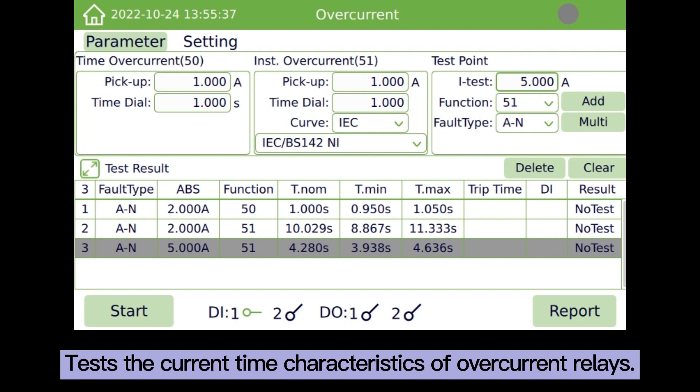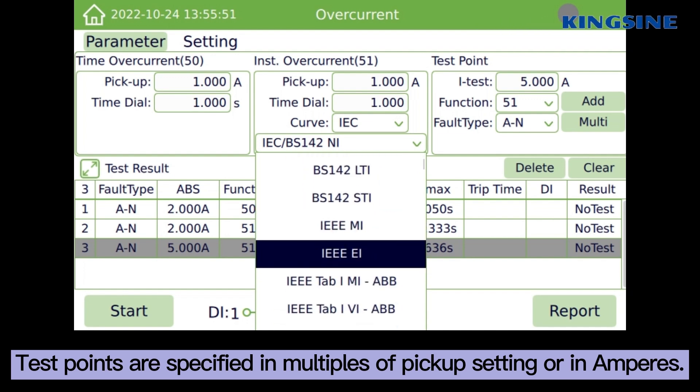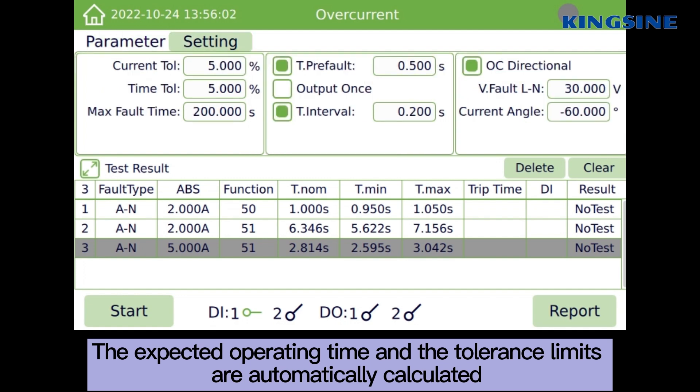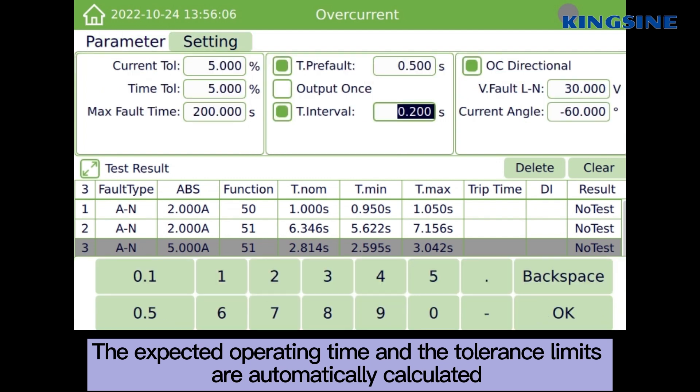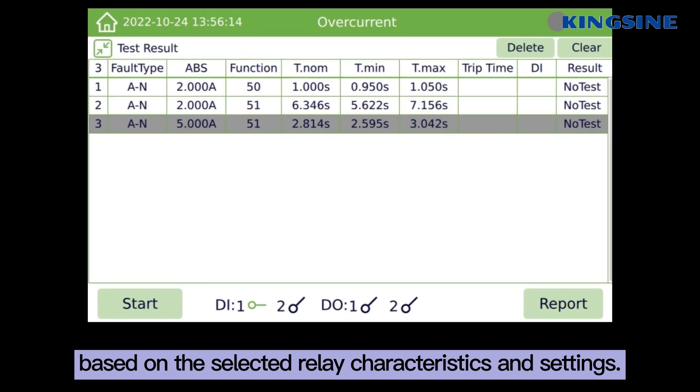Test the current time characteristics of overcurrent relays. Test points are specified in multiples of pickup setting or in ampers. The expected operating time and the tolerance limits are automatically calculated based on the selected relay characteristics and settings.